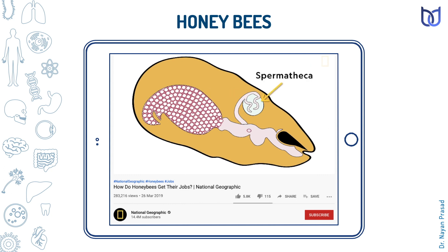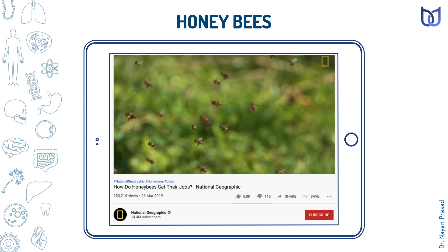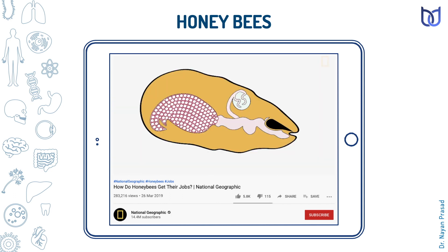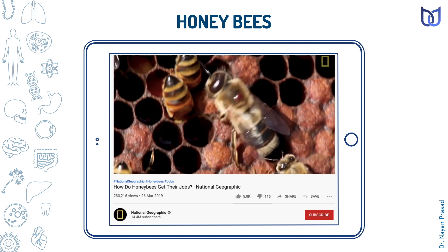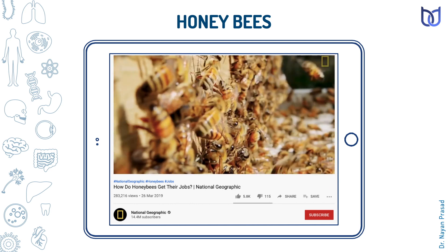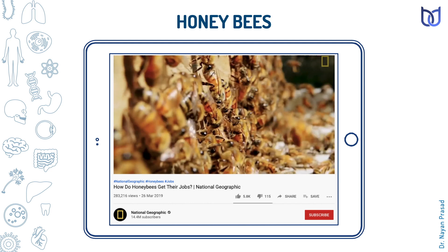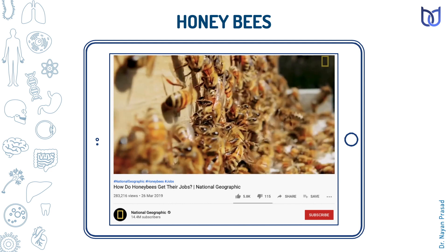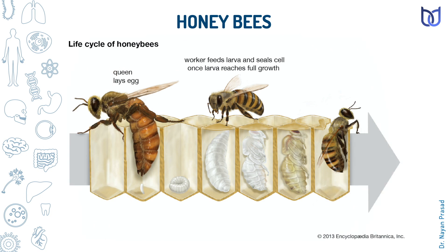The queen lays fertilized eggs; however, some of the eggs may be unfertilized also. The fertilized eggs hatch into female workers or a new queen, while unfertilized eggs hatch into drones. The eggs are laid in the cells of the hive. The queen bee lays about two thousand to three thousand eggs per day.